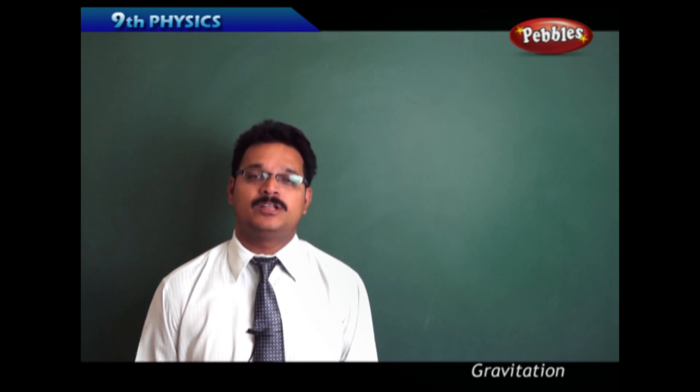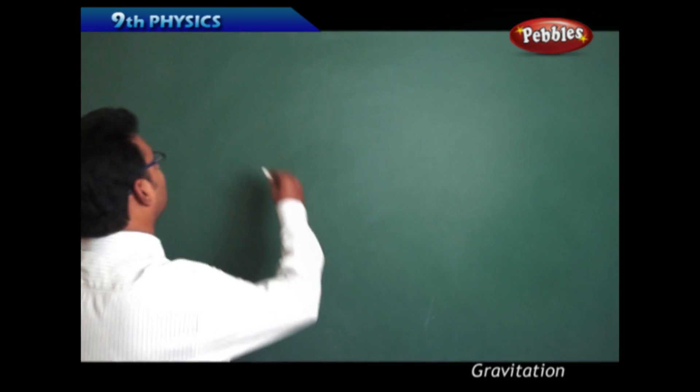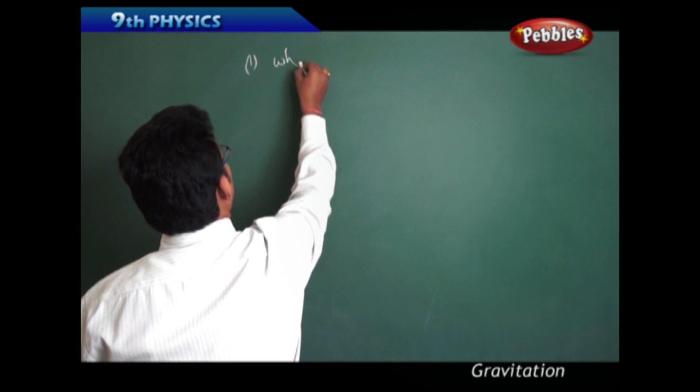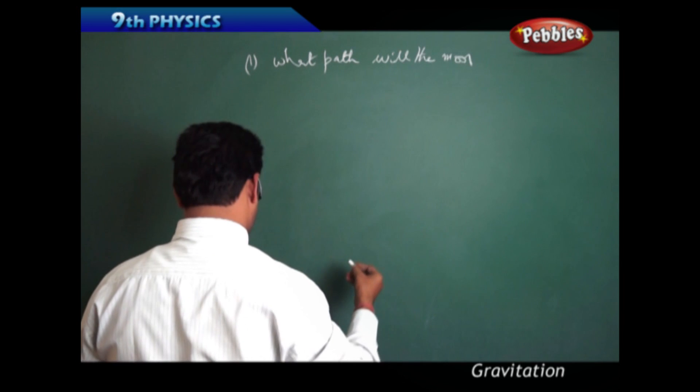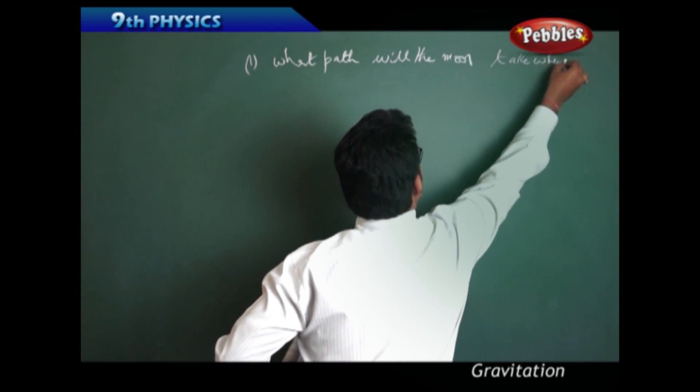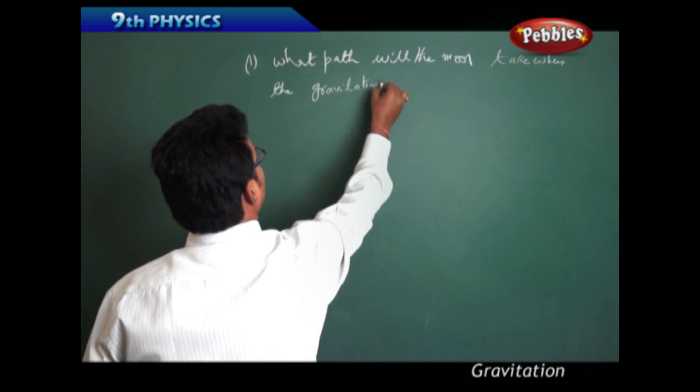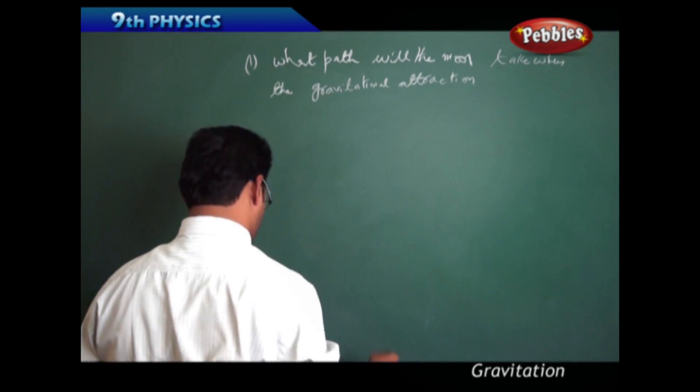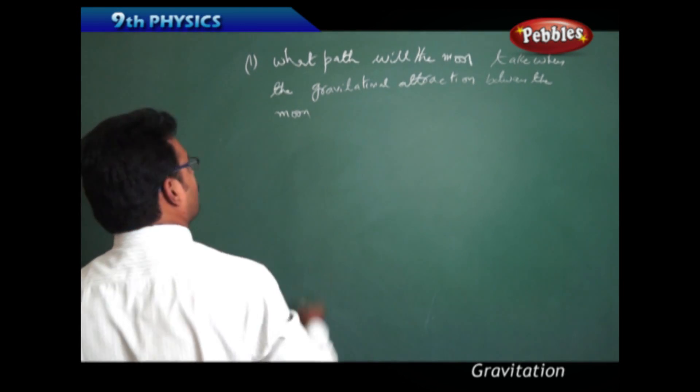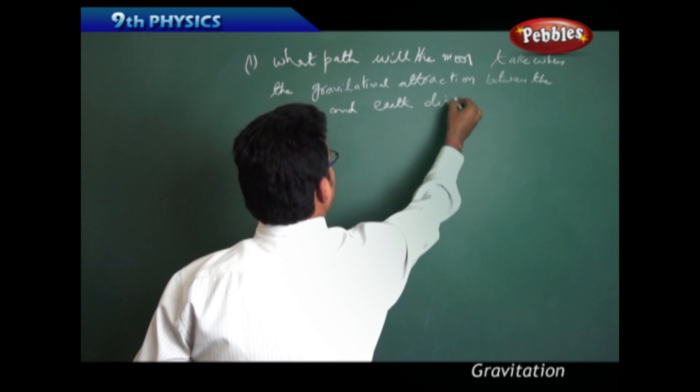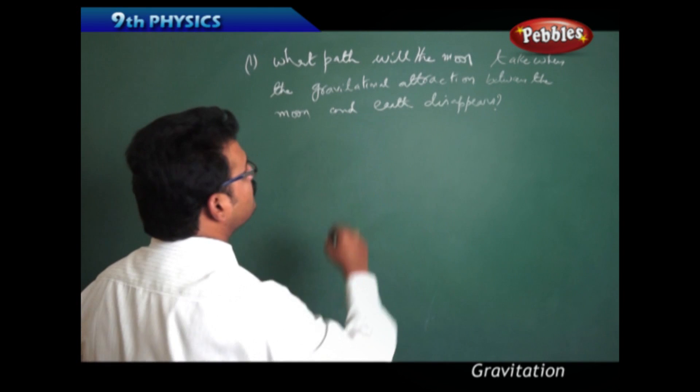Let us start with numerical number one. What path will the moon take when the gravitational attraction between the moon and earth disappears?